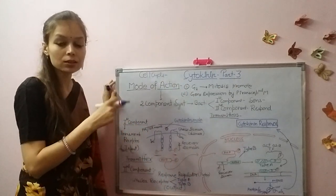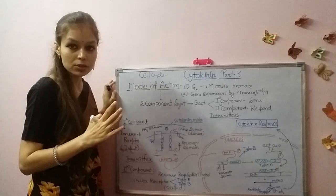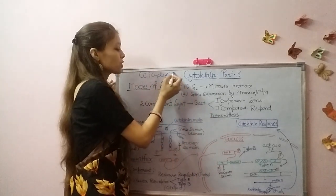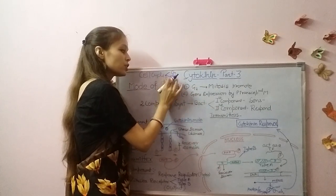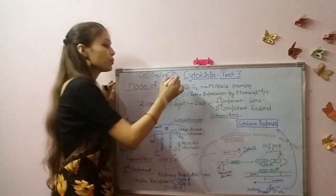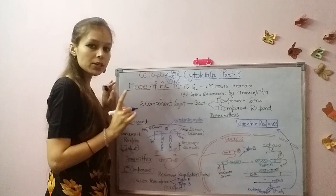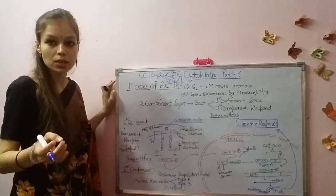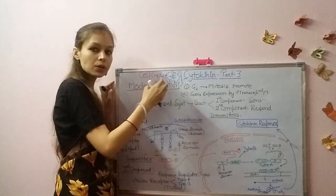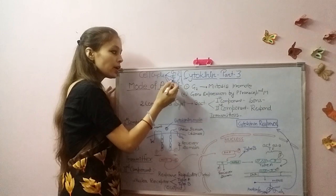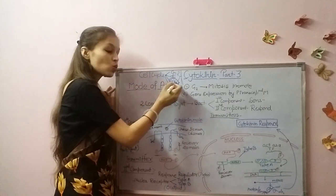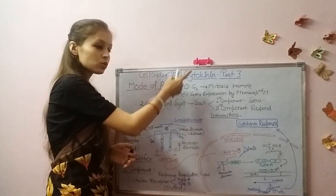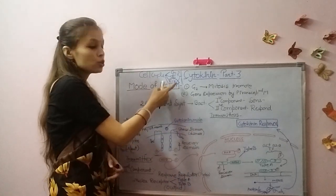Let's look at the phases of the cell cycle. There are four phases: G1, S phase, G2 phase, and M phase. G1, S, and G2 are preparatory phases, while M is the dividing phase. The nucleus divides during M phase — which includes prophase, metaphase, anaphase, and telophase. Cytokinin promotes the G2 to M transition.